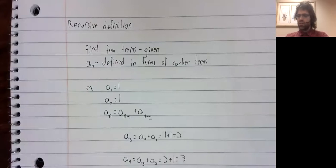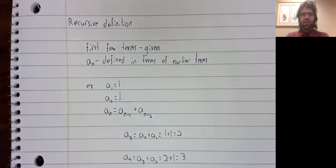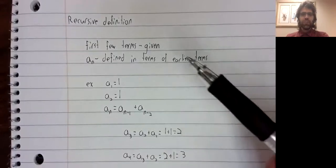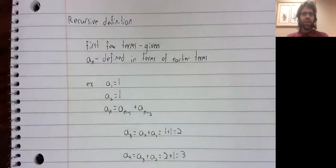Of course, the disadvantage of this is that if we want to know, say, a sub one hundred, we can't just plug one hundred into a formula. We have to first calculate a sub five, a sub six, a sub seven, up to a sub 99. Still, these recursive definitions appear a lot in important applications.